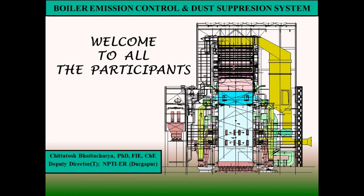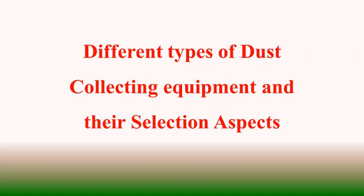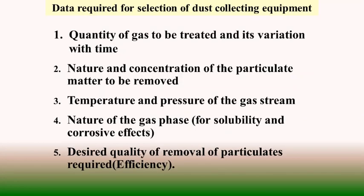A very good day to all the participants and welcome to this online program on power generation, transmission and distribution organized by National Power Training Institute, Durgapur. Today we are going to discuss about different types of dust collecting equipment and their selection, how they are utilized to follow the environmental pollution control norms and how to minimize the suspended particulate matter emission as well as to erase the polluting gases from the flue gas stream. For selecting the dust collecting equipment, we need some prior information so that appropriate equipment can be installed for the purpose of emission control.